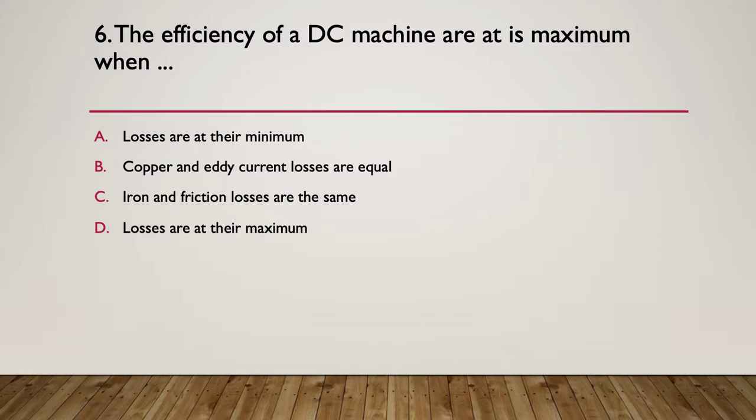Question six, the efficiency of a DC machine are at its maximum when: A, losses are at their minimum, B, copper and eddy current losses are equal, C, iron and friction losses are the same, or D where the losses are at their maximum. So A, B, C or D.